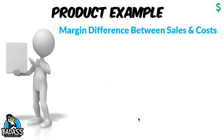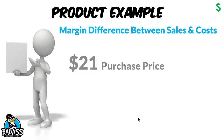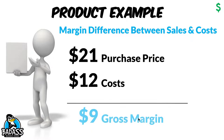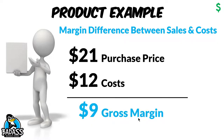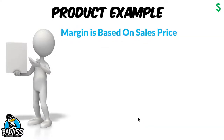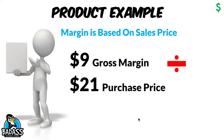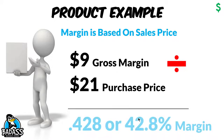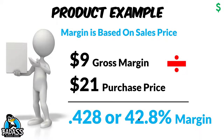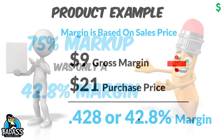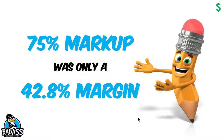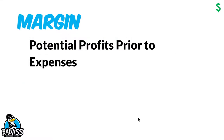Gross margin is the difference between the sales price and the cost of goods. So we take our $21 and subtract the $12 in cost, and we're right back at that same $9. The markup dollars are still $9, but what is the margin percentage? Margin is the markup amount — $9 — divided by the sales price. So $9 divided by $21 equals 0.428, or 42.8%. So while the markup is 75%, the actual gross margin is 42.8%. We need to understand what each of these things is trying to tell you.